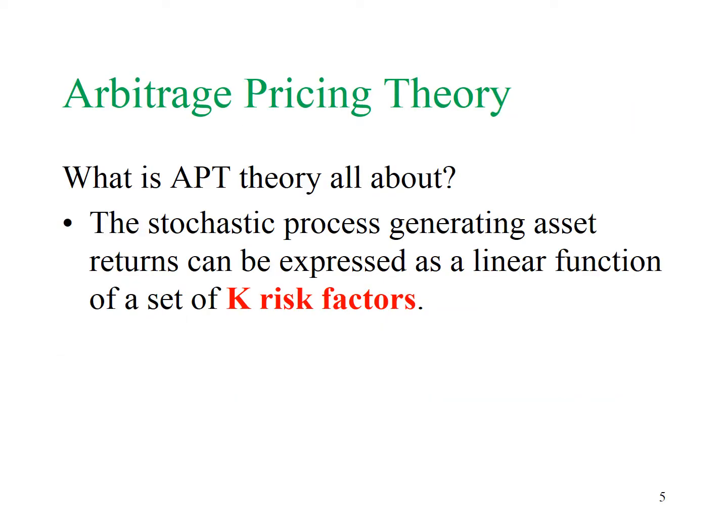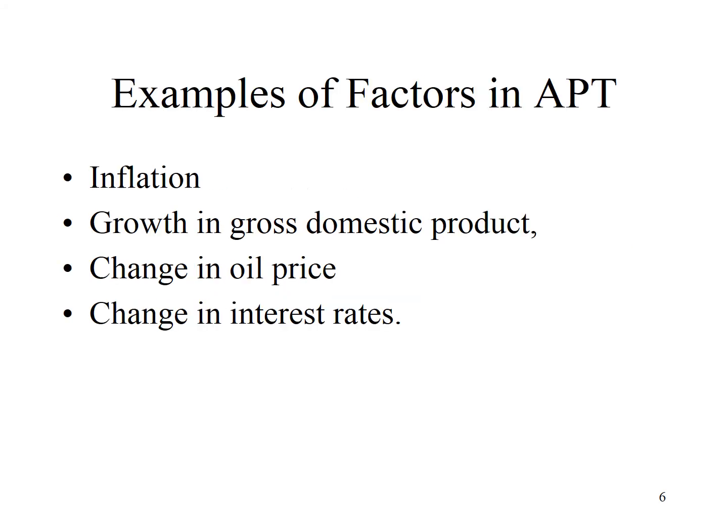The APT is a theory for explaining stock returns based on the sensitivity to a variety of risk factors. It assumes a linear model. The return on an investment can be explained by more than one factor. According to APT, a market is perfectly efficient if it is not possible to earn a risk-free arbitrage profit by simultaneously buying and selling the same assets. The APT contends that there are many factors that affect return, in contrast to the CAPM where the only relevant risk is beta.